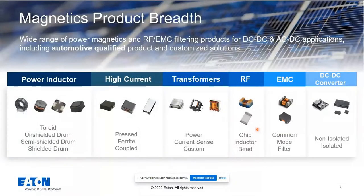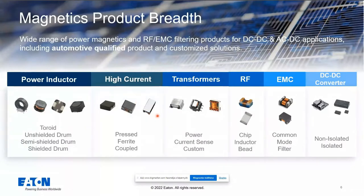Looking at our magnetics products, we started with power inductors back in the 1960s, being a primary developer of ferrites and ferrite-based solutions like shielded and unshielded inductors and toroids. In the last 20 years we focused more on high-current molded inductors and specialized ferrite flatback-style inductors. We also have transformers for power, current sense, and custom applications. Recent additions include RF chip inductors, ferrite beads, and EMC components for noise filtering and DC-DC converters.